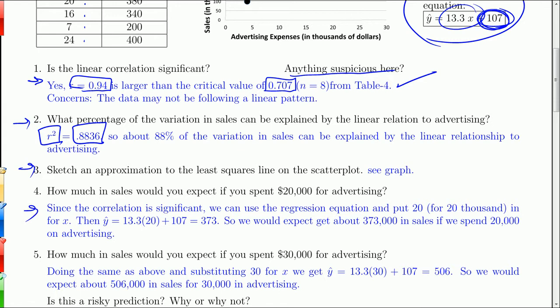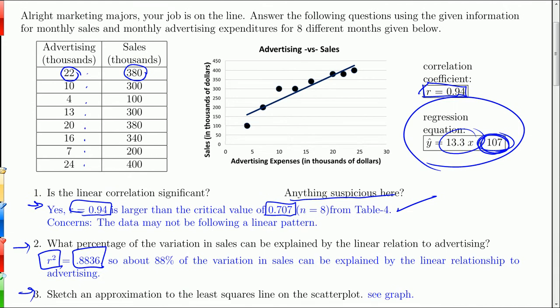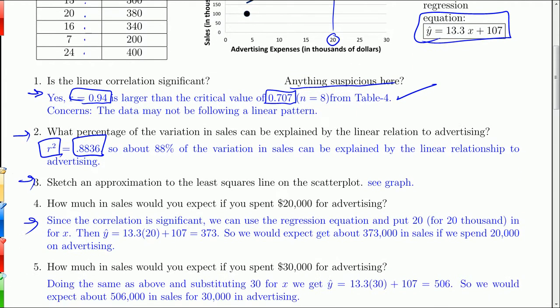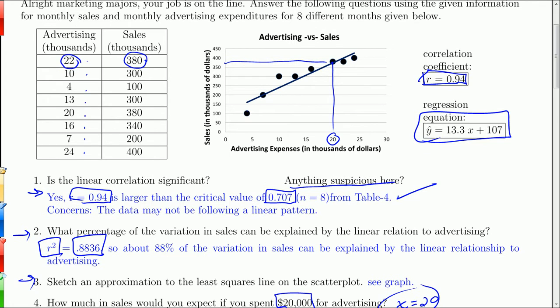How much in sales would you expect if you spent $20,000 in advertising? We can ballpark it from here. If we had spent $20,000 in advertising, we would expect somewhere around $375,000 in sales. But since we have the regression equation, I'm looking for an exact estimate. When you put 20 into the regression equation, you get 373. So you would expect about $373,000 in sales if you spent $20,000 on advertising.